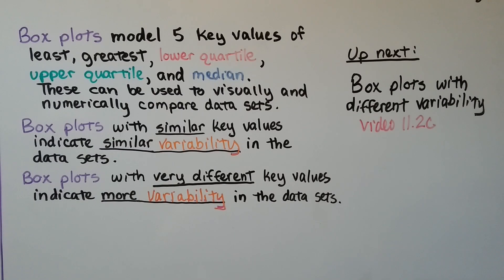As we said in the previous video, box plots model five key values: the least value, the greatest value, the lower quartile, the upper quartile, and the median. These can be used to visually and numerically compare data sets. Box plots with similar key values indicate similar variability in the data sets. And box plots with very different key values indicate more variability in the data sets.